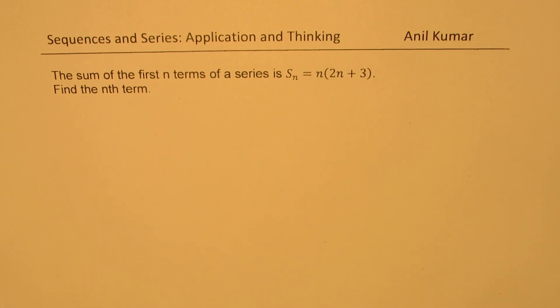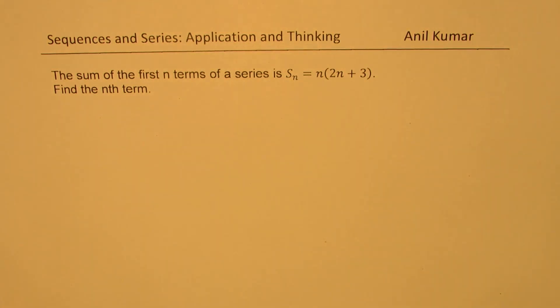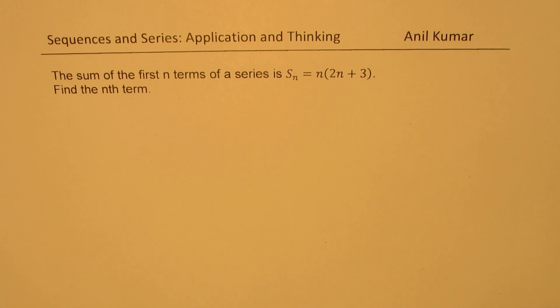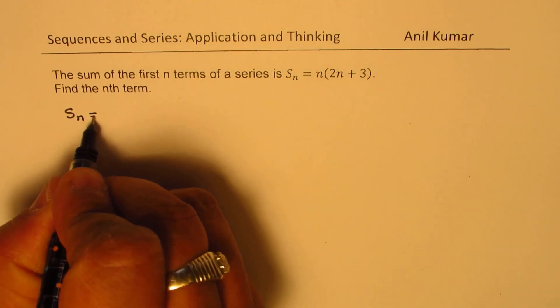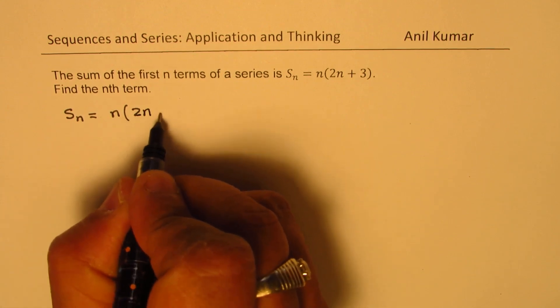You can always pause the video, answer this question, and then look into my suggestions. Now when we are given the sum of terms, how do we find n terms? Well, let's begin by writing each term sum. So we are given this formula, s of n sum of n terms is equal to n times 2n plus 3.